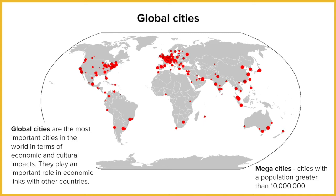So global cities are the most important cities in the world in terms of economic and cultural impact and how they spread that around the world. One good way of showing that is the fact that although the UK is a very small island, there are a large proportion of people that speak English around the world, and that is because of our global impact from global cities. They play an important role in economic links with other countries.